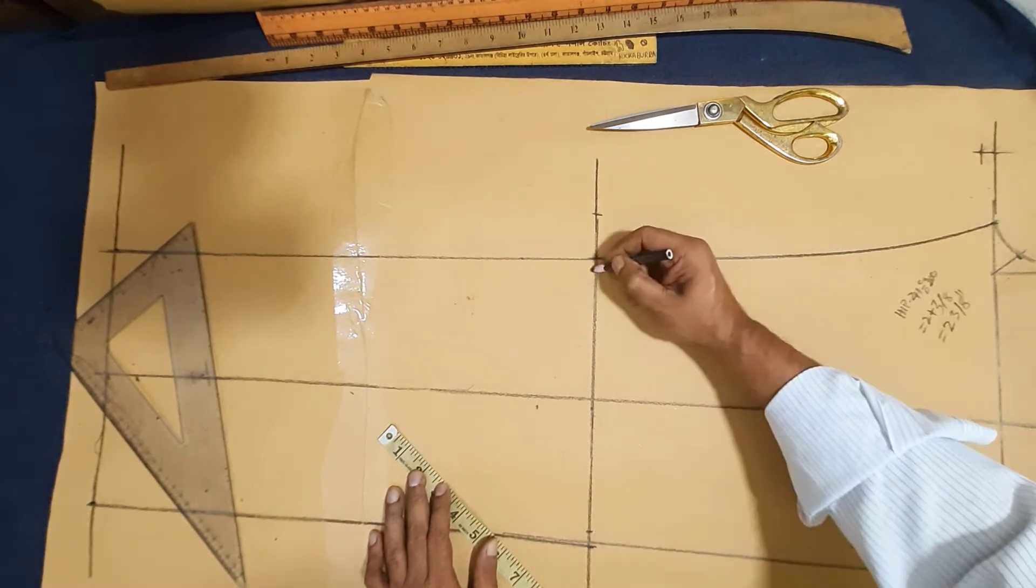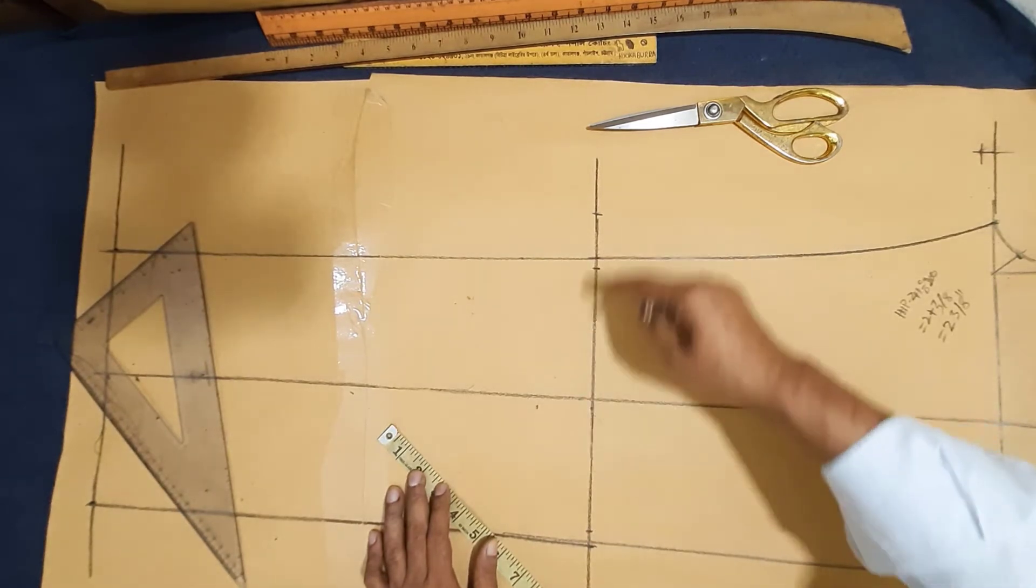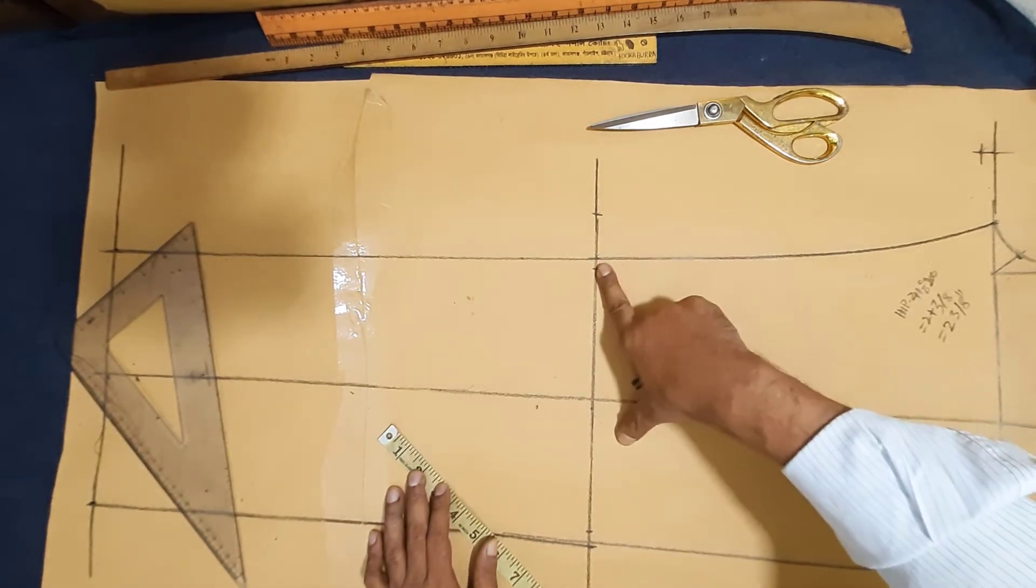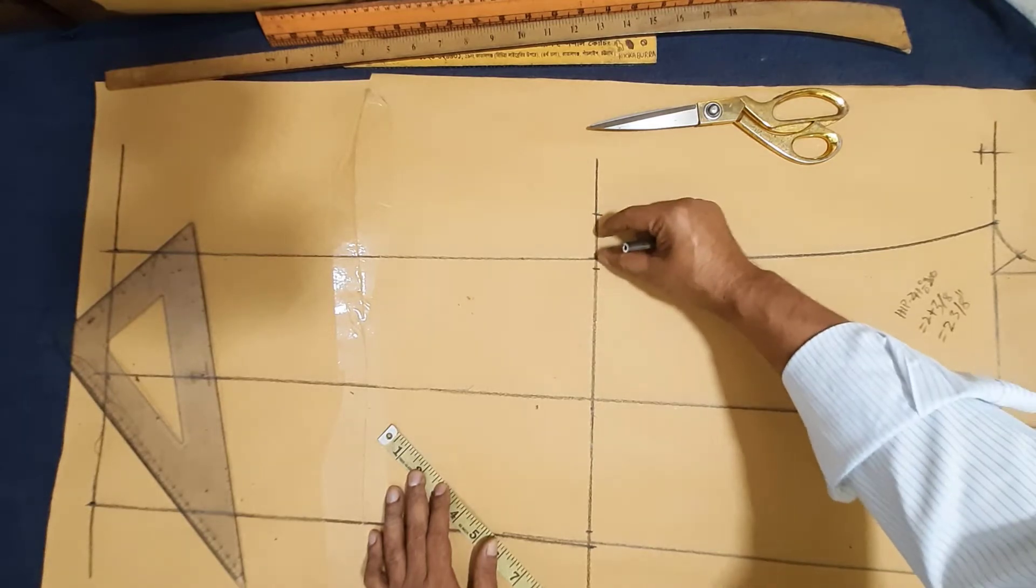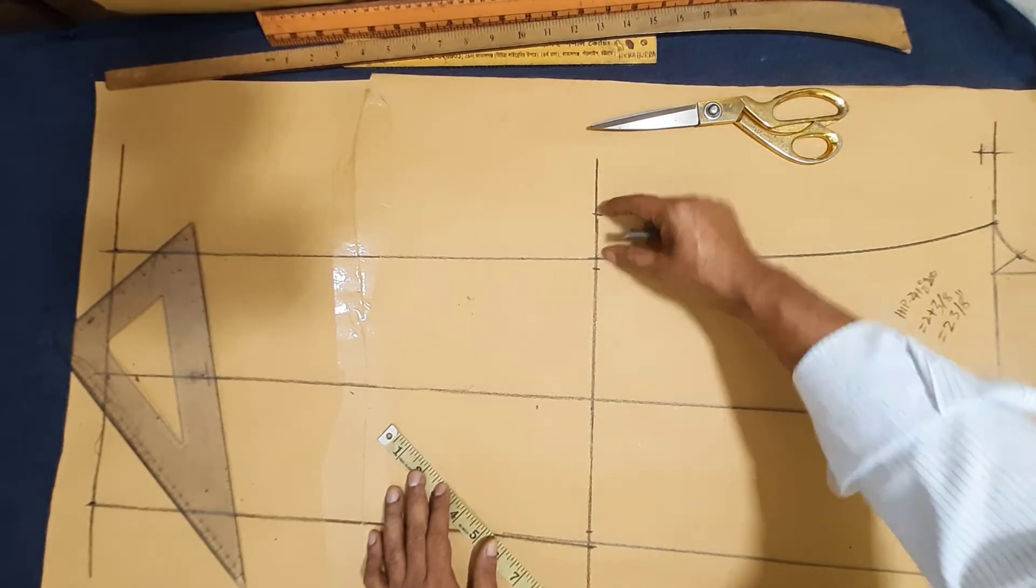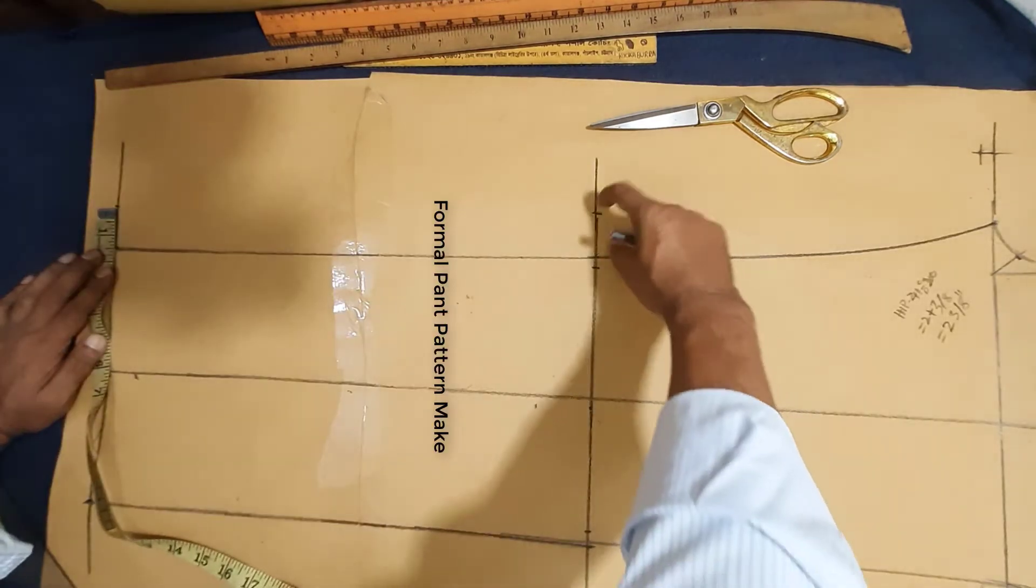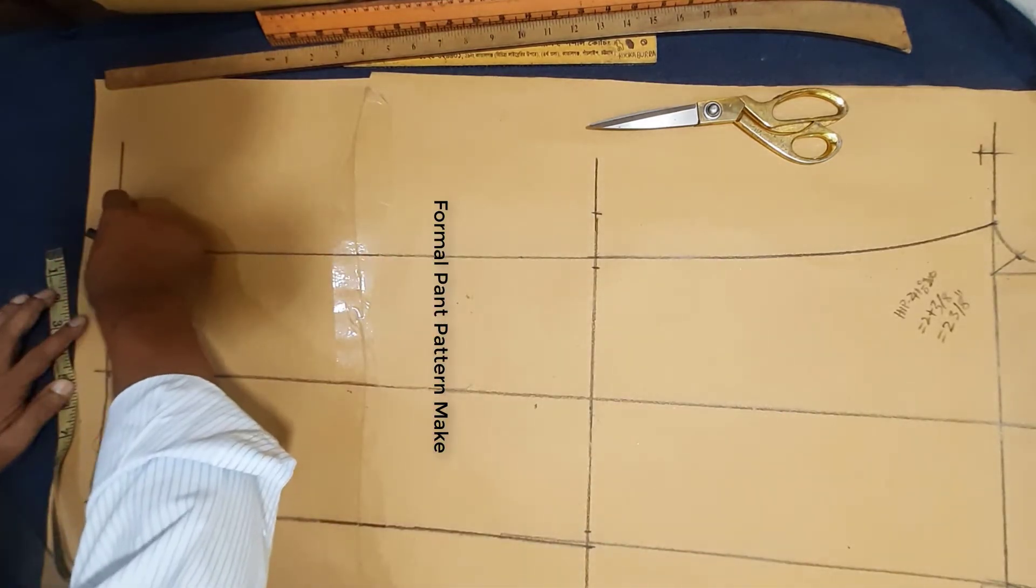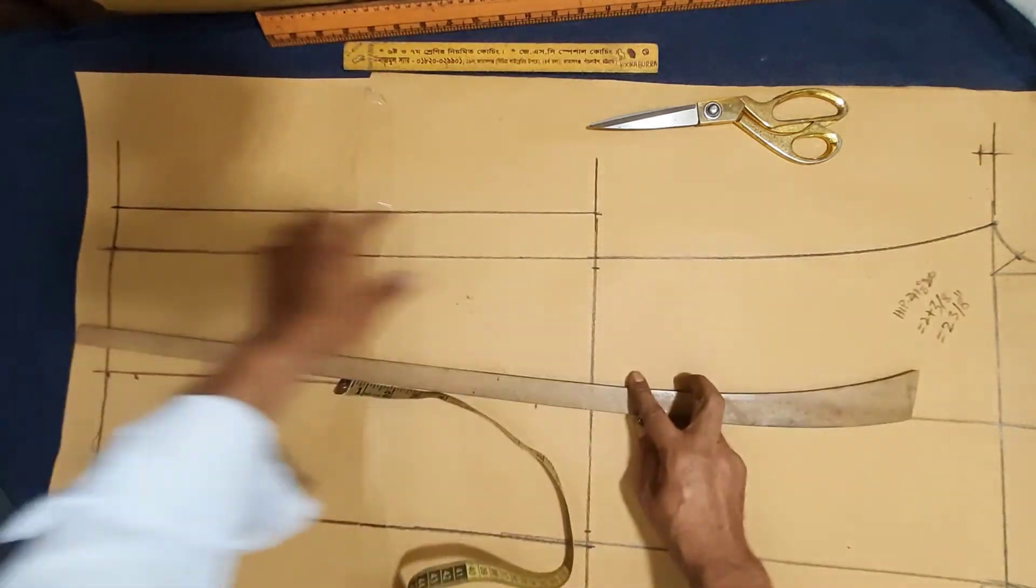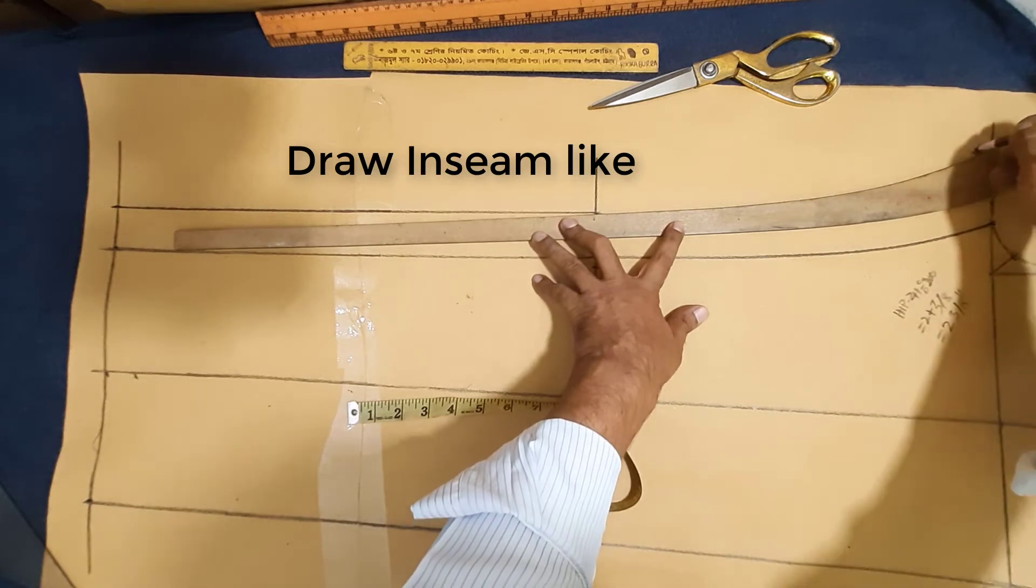Side seam, 3/8 seam allowance, three quarter front and back, one and a half inch seam long, in seam and inside.